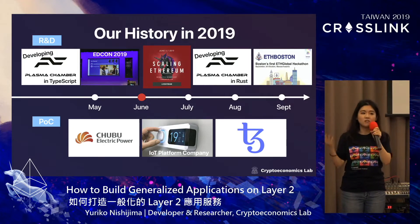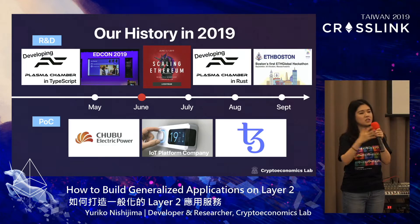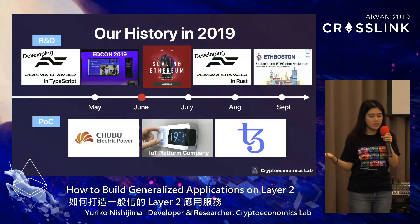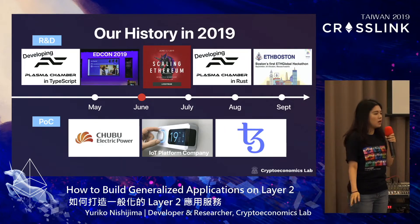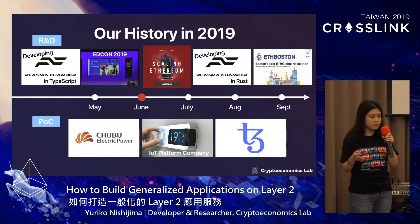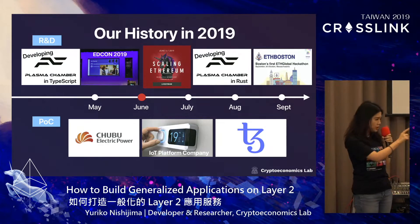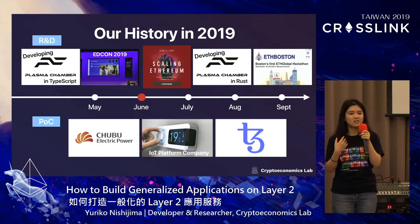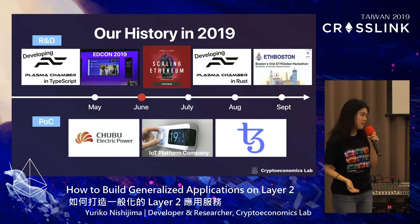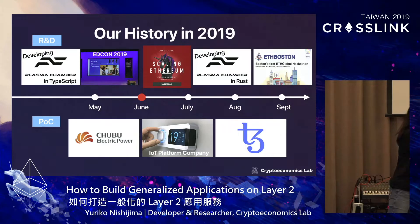However, it was sometimes tough to run POC projects and R&D at the same time, because the project went back and forth as the basic design was updated in research. Our hope to get the framework development done as soon as possible and run POC projects entirely based on our framework got stronger and stronger. So in June we stopped, took time, and started thinking over the core values we wanted to create in our framework once again.